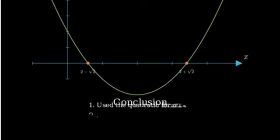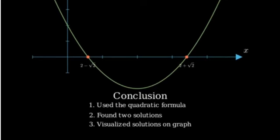In conclusion, we've solved the quadratic equation x squared minus 4x plus 2 equals 0 using the quadratic formula. We found two solutions: 2 plus the square root of 2, and 2 minus the square root of 2. We've also visualized these solutions on the graph of the quadratic function.